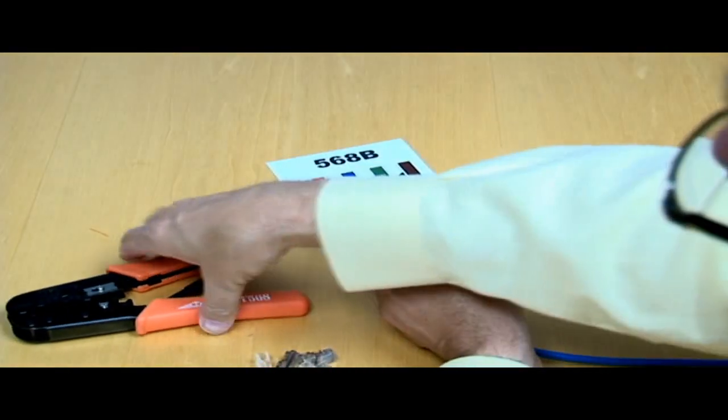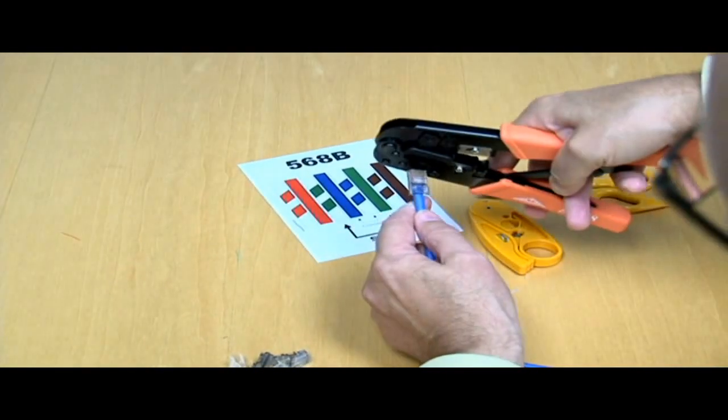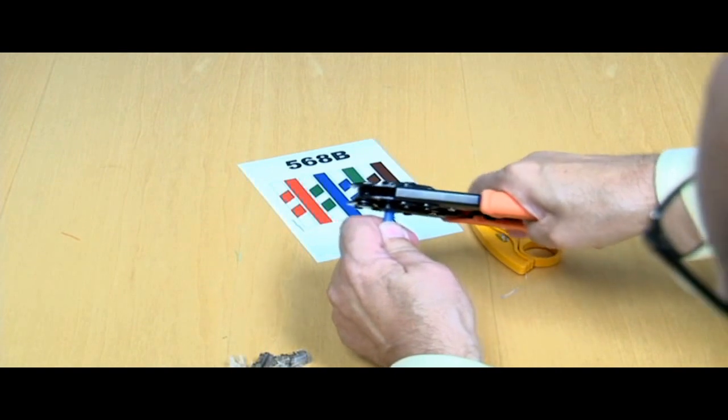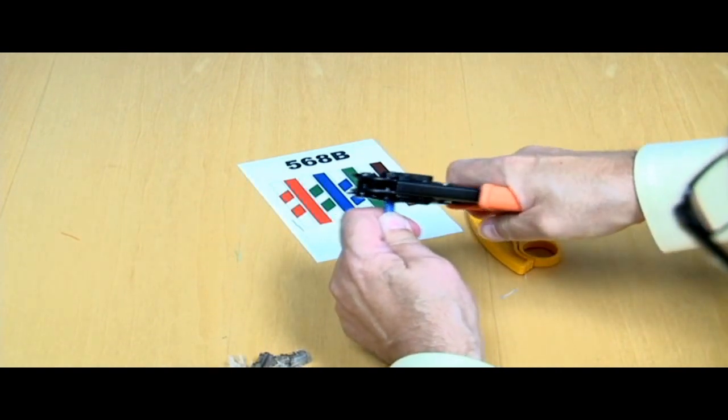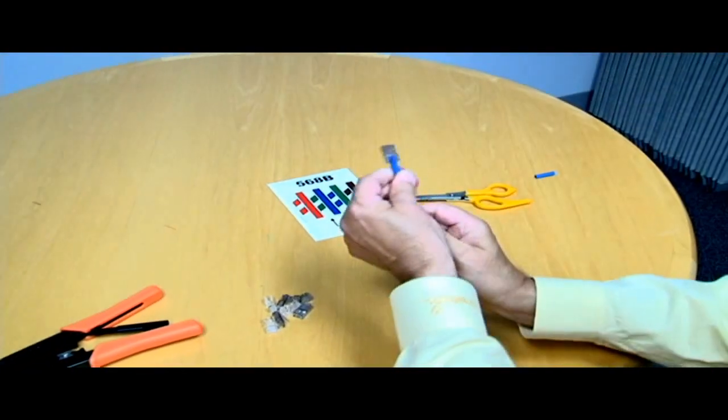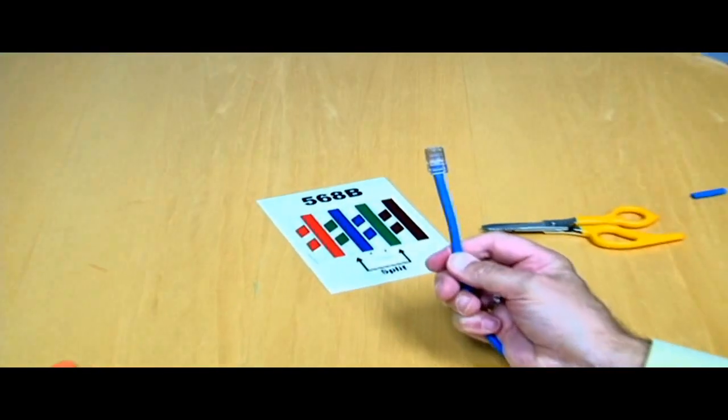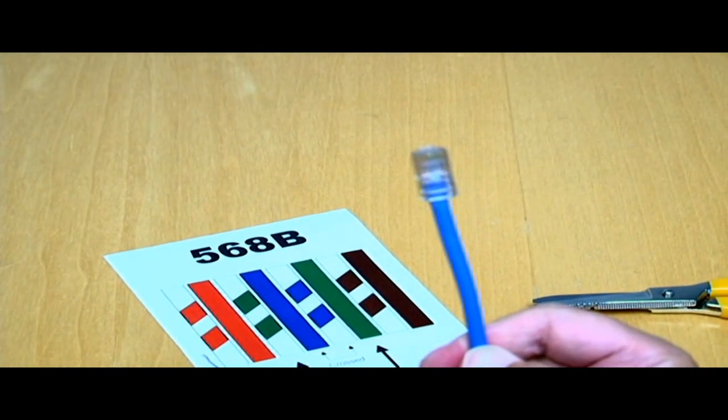Then the next thing we do is get our crimp tool. We insert the crimp tool onto the plug and cable, push and squeeze. And there you go. We have direct attached a modular plug to the end of a Category 6 cable.